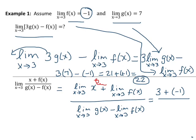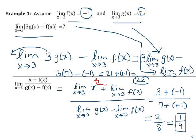The limit of g(x) is 7 and the limit of f(x) is again negative one, so the denominator is 7 minus negative one, which equals 8. The numerator 3 plus negative one equals 2. So we have 2 over 8, which reduces to one fourth. That's the limit as x approaches 3 of this given composition of functions.